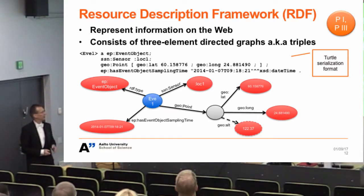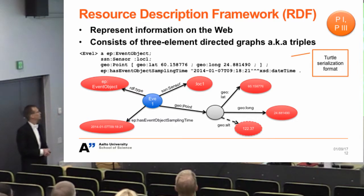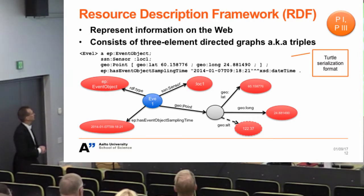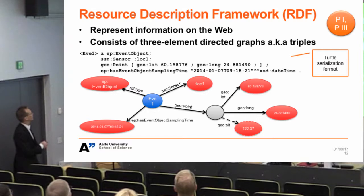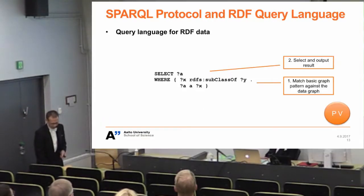In the semantic web, data is represented as RDF — you see triples: a graphical representation of subject, predicate, object in a directed graph, and a Turtle serialization which has these same elements for data.